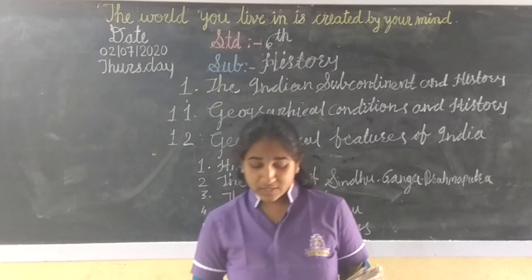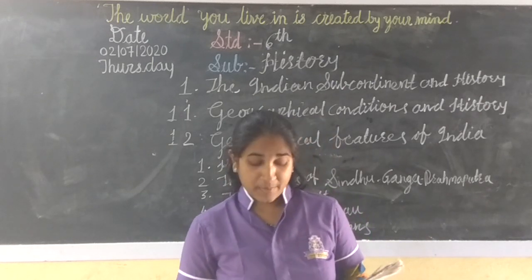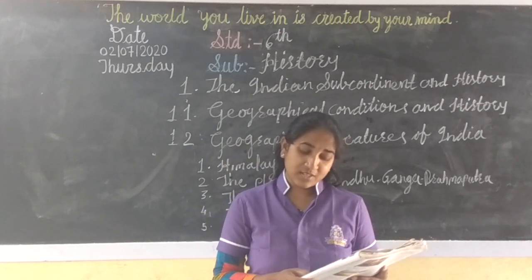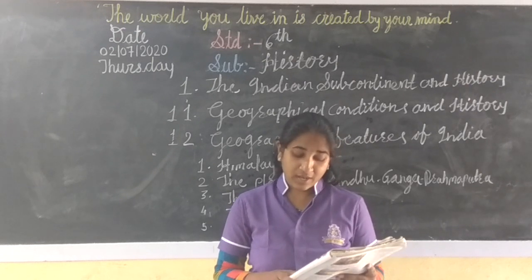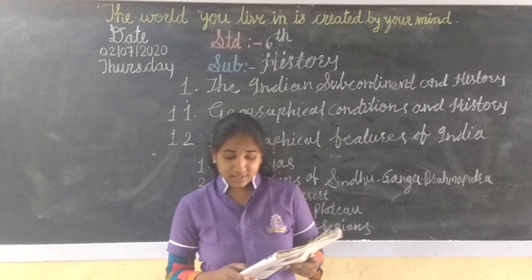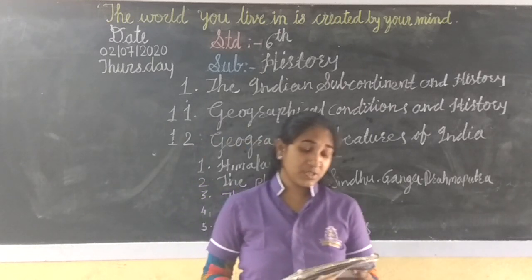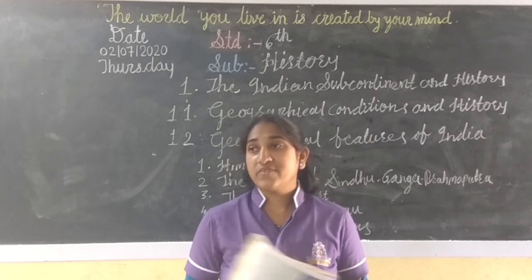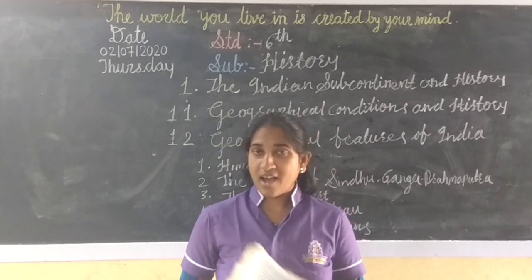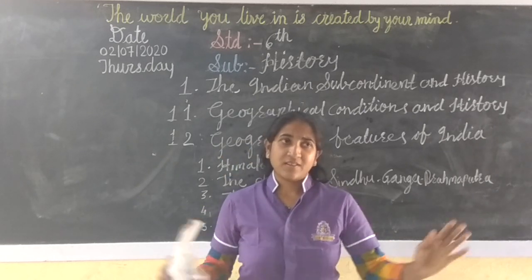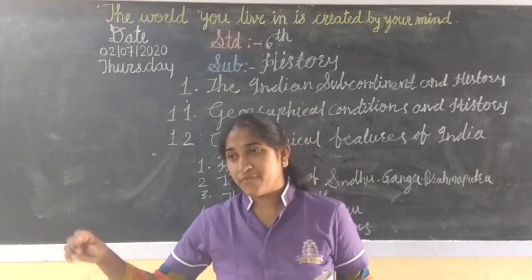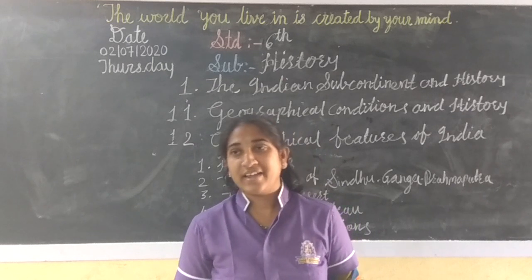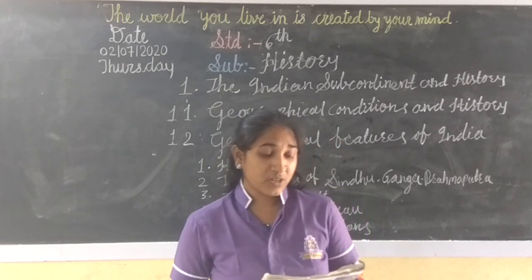Next, the plains of the Sindhu, Ganga, and Brahmaputra. This region consists of the basins of three big rivers — Sindhu, Ganga, and Brahmaputra — and their tributaries. This river plain extends from Sindhu Pradesh in the West to present-day Bangladesh in the East. All three rivers form tributaries, and together they flow across this vast plain.